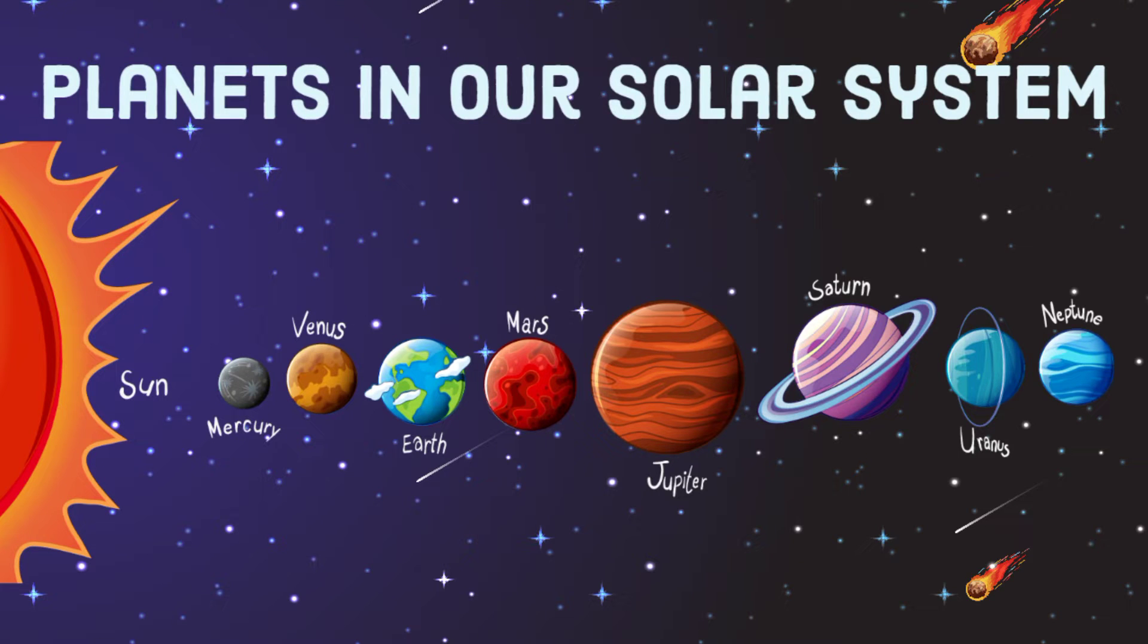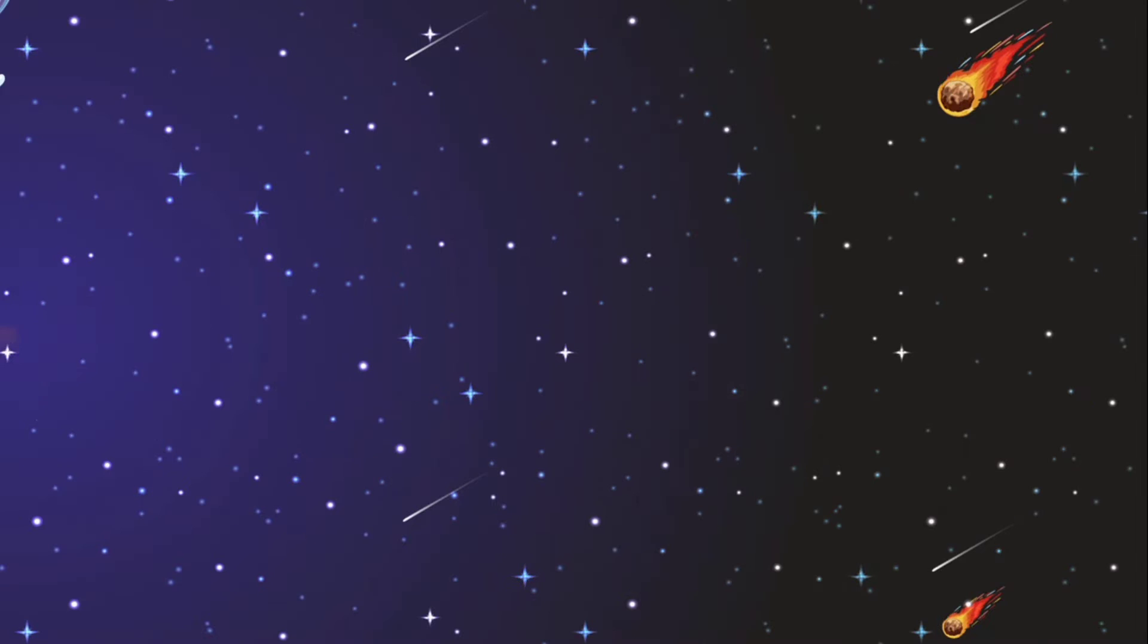Come children, let us learn planets in our solar system. We have eight planets that revolve around the sun.